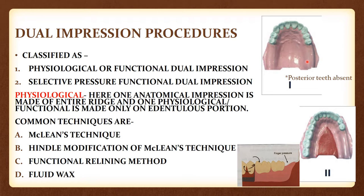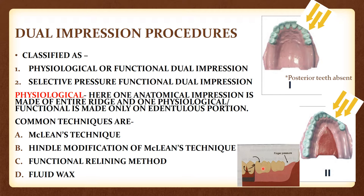We know that tissue is a soft structure and teeth are a hard structure. When masticatory forces are applied in such cases, the soft tissue will compress more compared to the teeth, and because of this it will lead to a tissue-ward movement of the denture, producing rotation of the prosthesis.